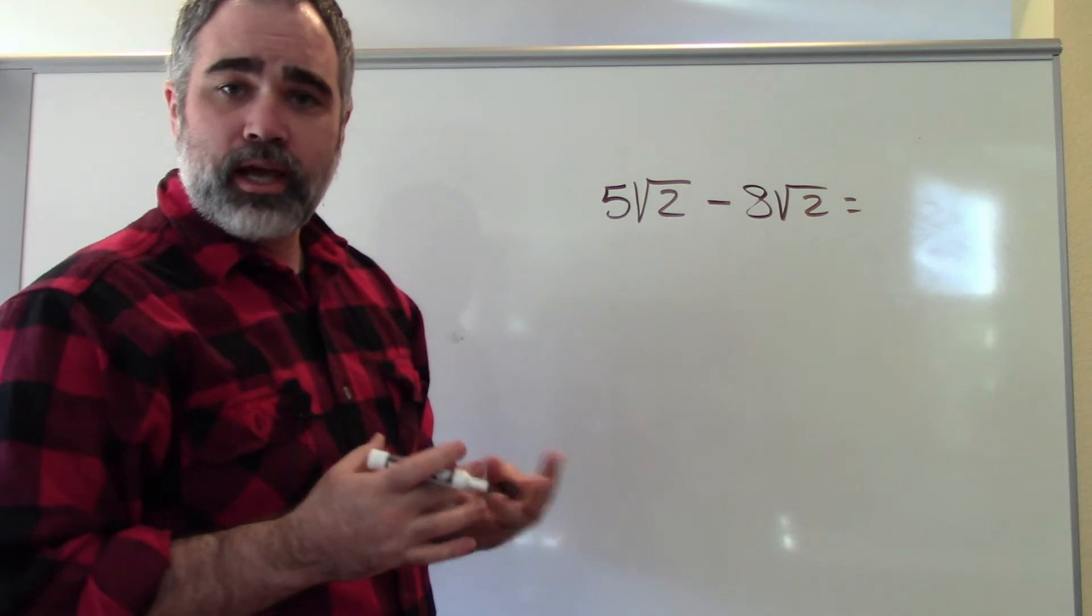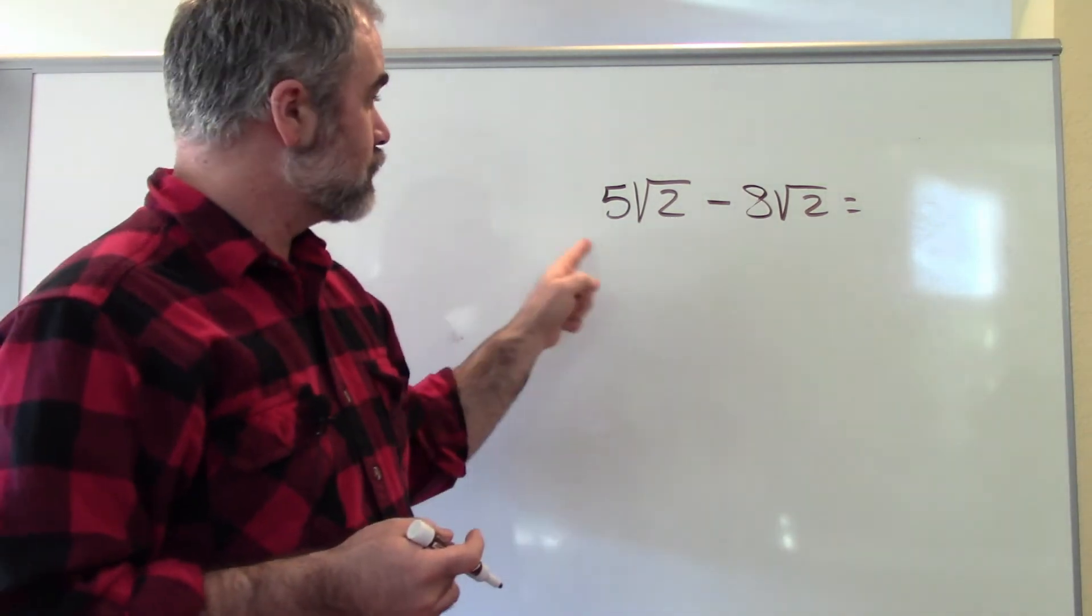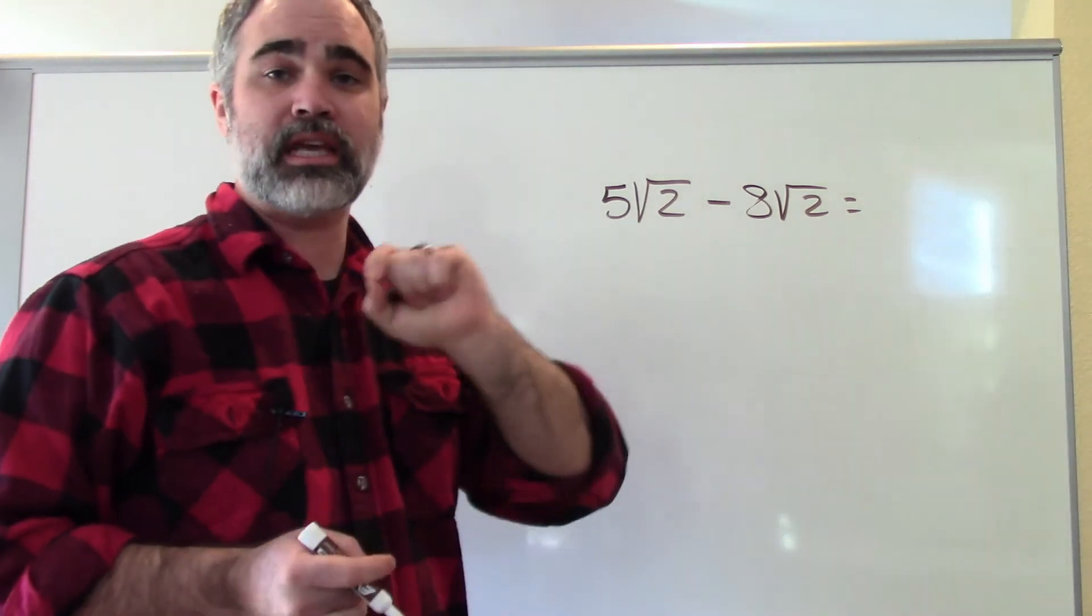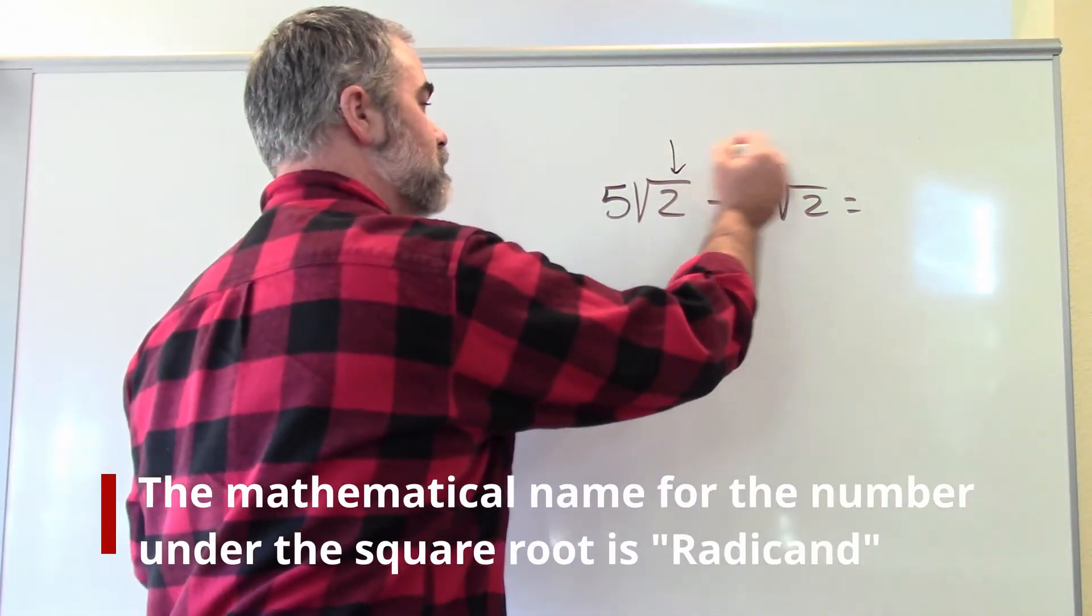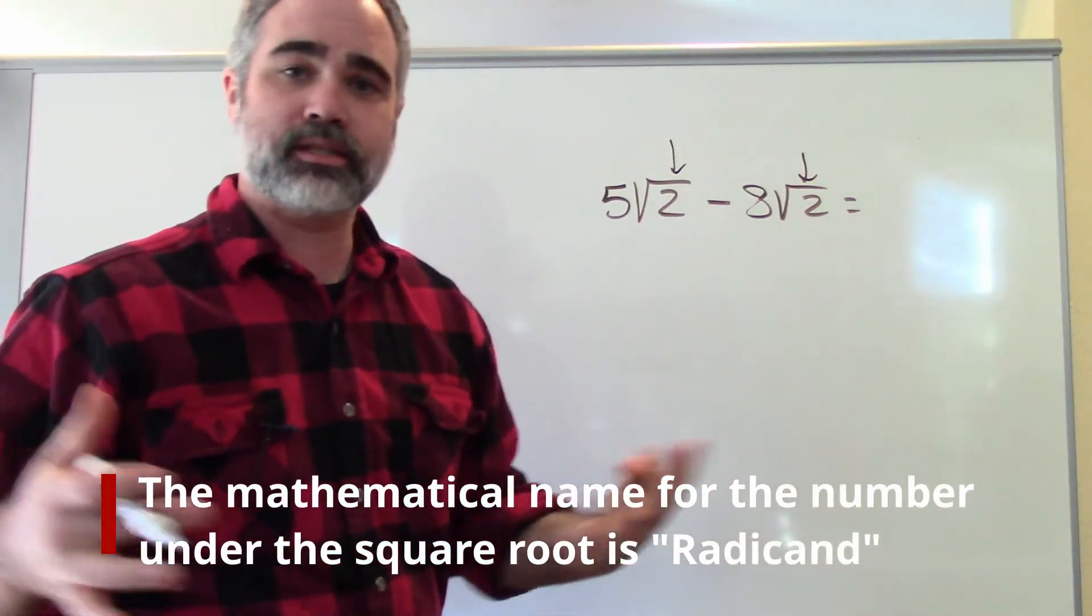And the same way, you can subtract square roots. But they have to have the same number on the inside. These two have to match. If they don't match, you can't subtract them. But if you can, it's exactly the same as combining the numbers of variables.